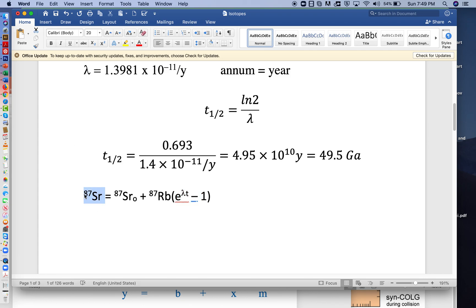It's easier in laboratory experiments to measure the ratio of strontium-87 to something stable, like strontium-86. We'll divide both sides of the equation by strontium-86.